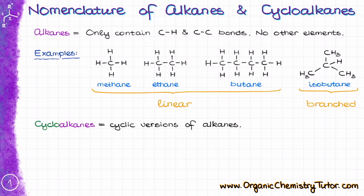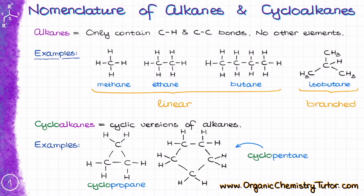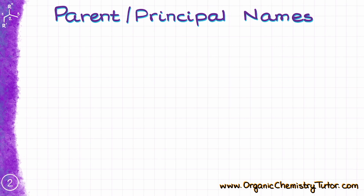In turn, the cycloalkanes are the cyclic versions of alkanes. They also only contain single carbon-carbon and carbon-hydrogen bonds, but unlike simple alkanes, which are open-chain molecules, the cycloalkanes have ring segments in them. For instance, here I have the structures of cyclopropane and cyclopentane. As we can see, cyclopropane is a cyclic 3-membered ring, while cyclopentane is a cyclic 5-membered ring.